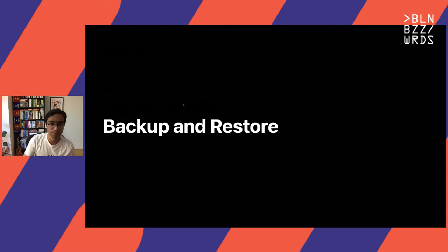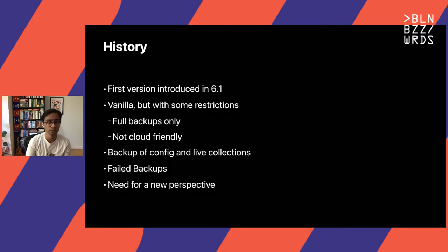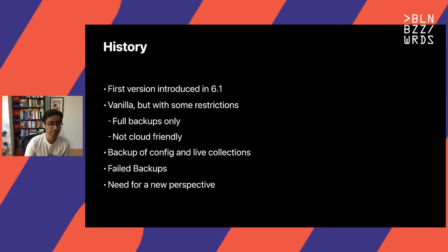Diving a little deeper into backup and restore options for Solr. The backup and restore feature was first introduced in version 6.1. When it was introduced, it was basic but came with some restrictions. Most importantly, it only allowed for full backups and was not really cloud friendly — all it would allow users to do is back up either on NFS or HDFS. There was no way to only backup data or configs, so it would always backup everything every time. More often than not, there were a lot of failed backups.